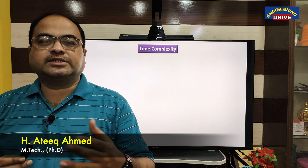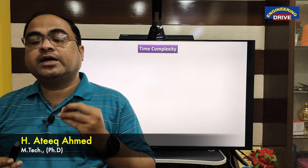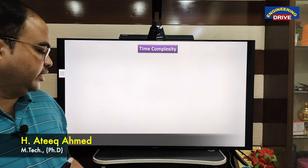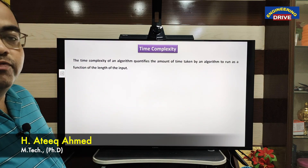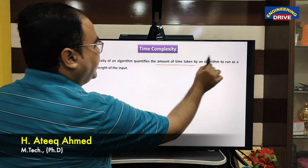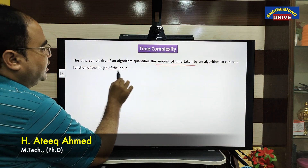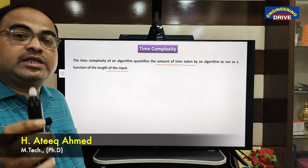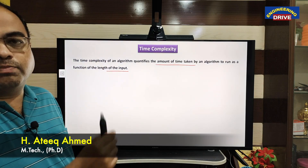Dear students, let us discuss now about what is time complexity and how we can find out the time complexity of an algorithm. The time complexity of an algorithm quantifies the amount of time taken by an algorithm to run as a function of the length of the input. So it means the amount of time taken by the algorithm to give the output — that is time complexity.